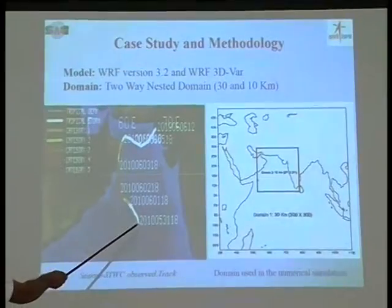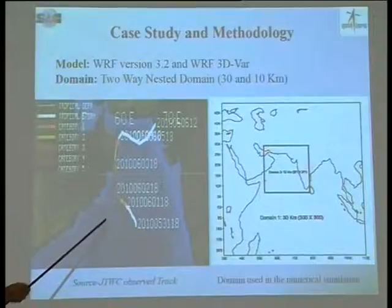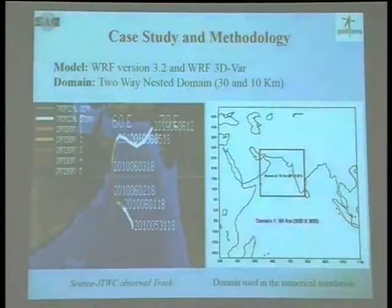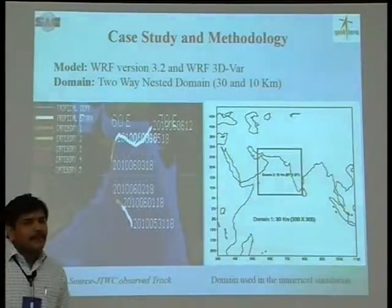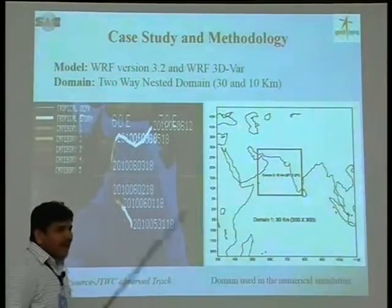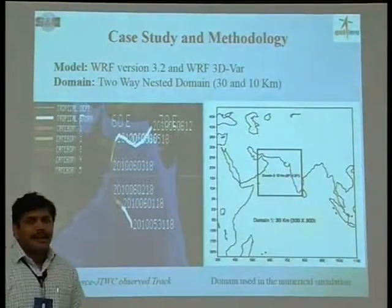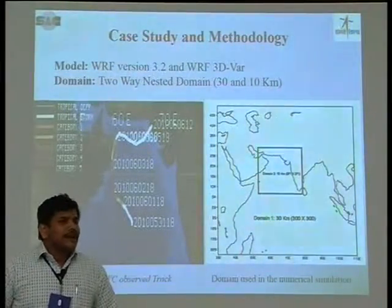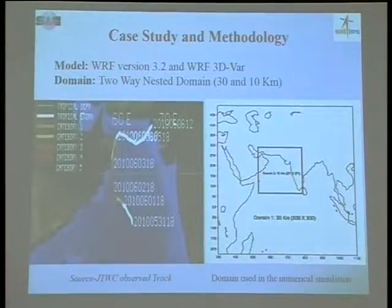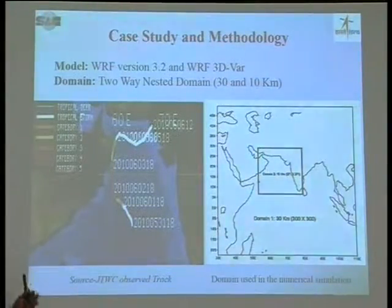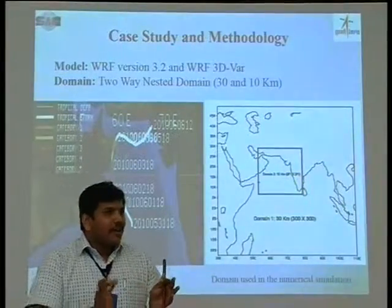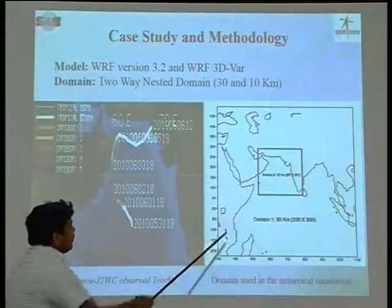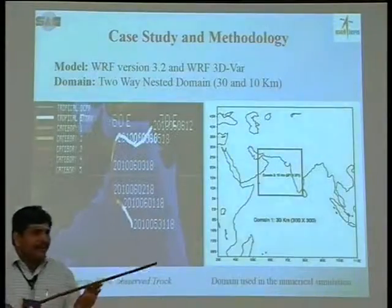This is the typical track taken from the JTWC, showing the cyclone first hitting the Oman coast and then moving toward Pakistan. For the tracking procedure, I used the WRF model, which is an NCAR-based model, and the assimilation scheme used is 3DVAR. For 3DVAR, I calculated background error using the NMC method — the National Meteorological Center method — based on forecast differences between 12-hour and 24-hour forecasts to generate the background error covariance matrix. I use a nested domain with a high-resolution 10 km domain centered on the cyclone position.